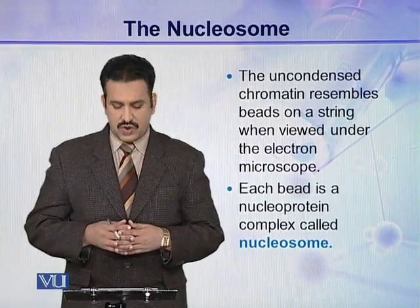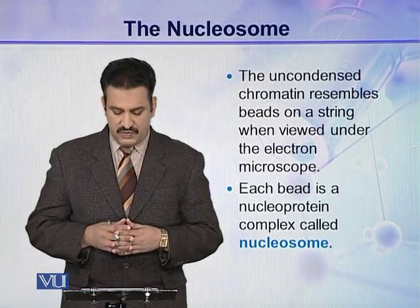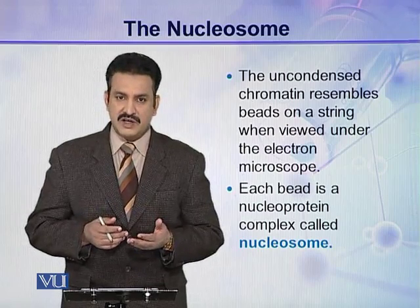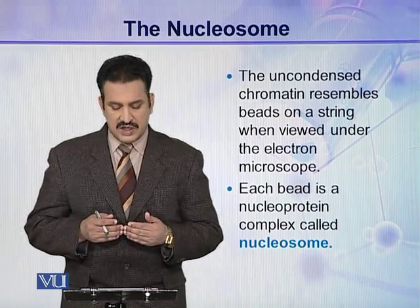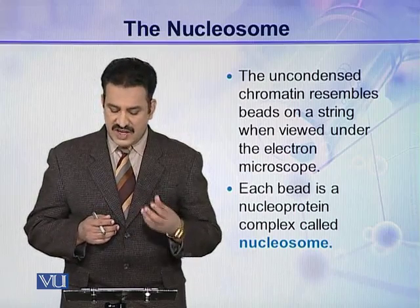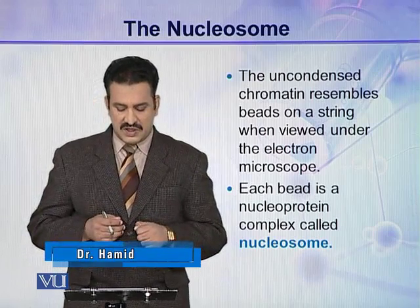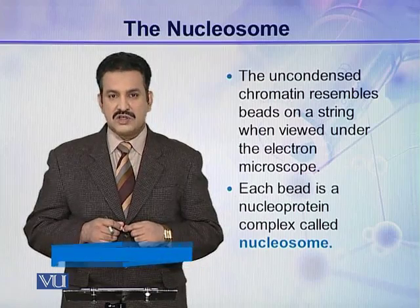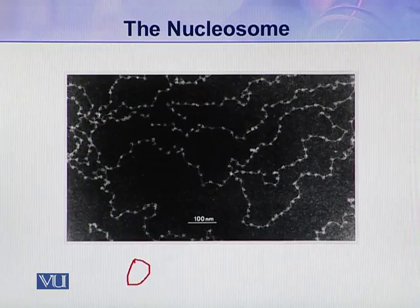The uncondensed chromatin, or euchromatin, resembles beads on a string when viewed under the electron microscope. During interphase, when the cell is not dividing, chromosomes are not present, and the chromatin is in uncondensed form. When we view this chromatin under the electron microscope, it appears as beads on a string. Each bead is a nucleoprotein complex called a nucleosome, as visible in this electron micrograph.